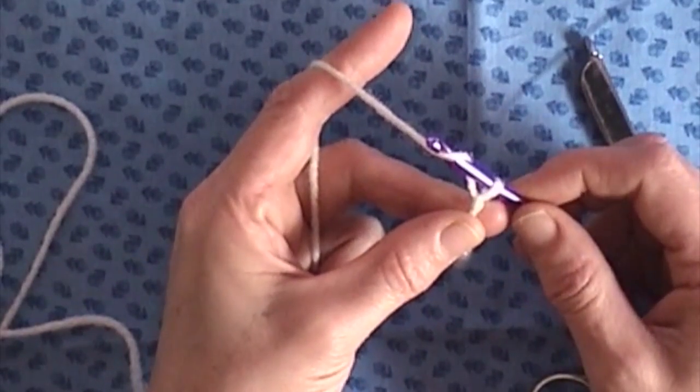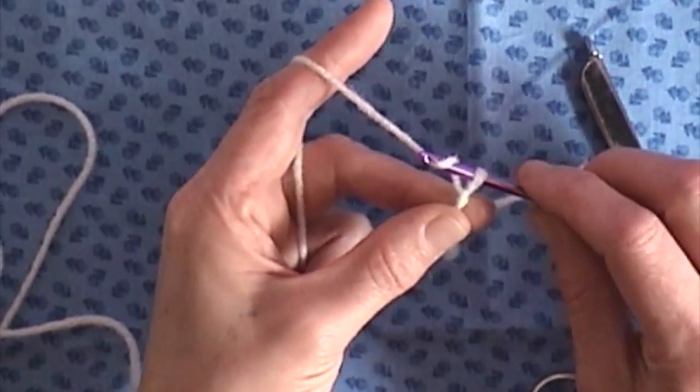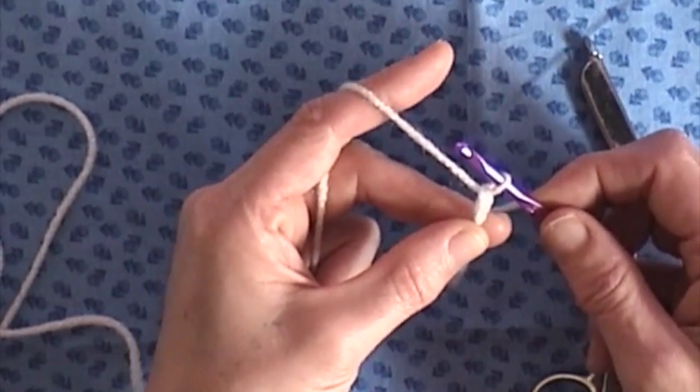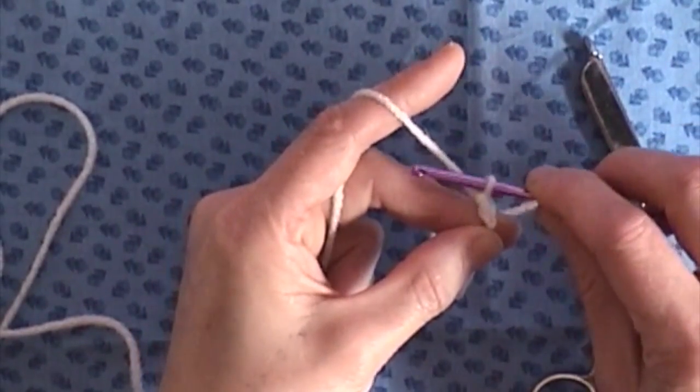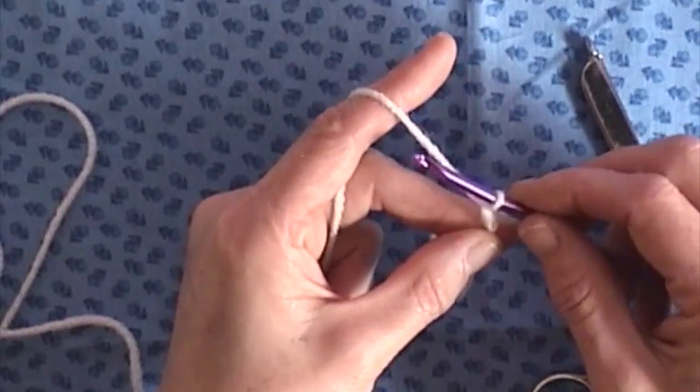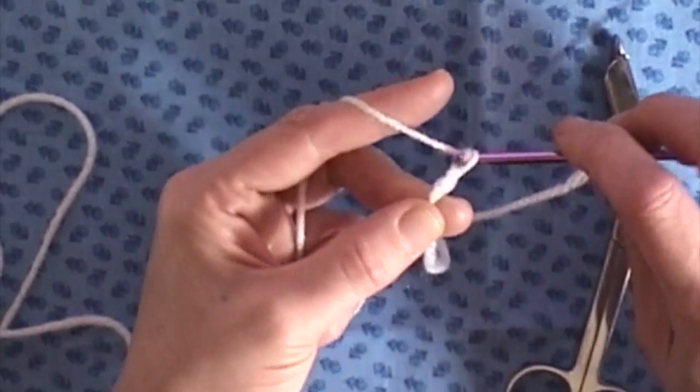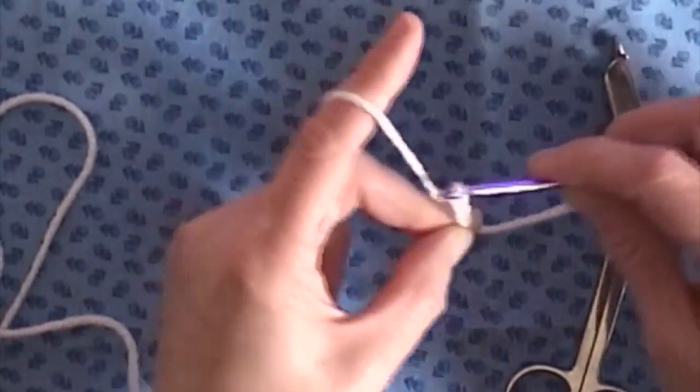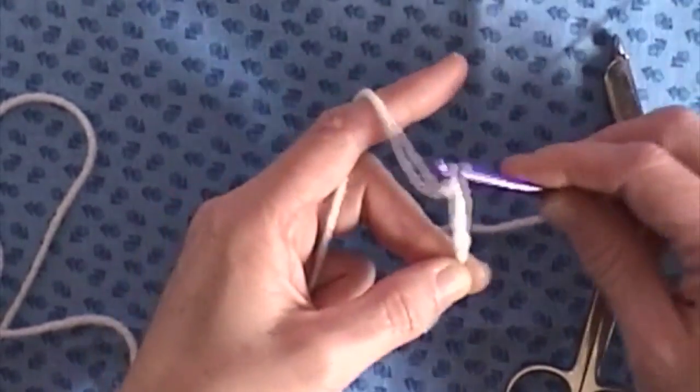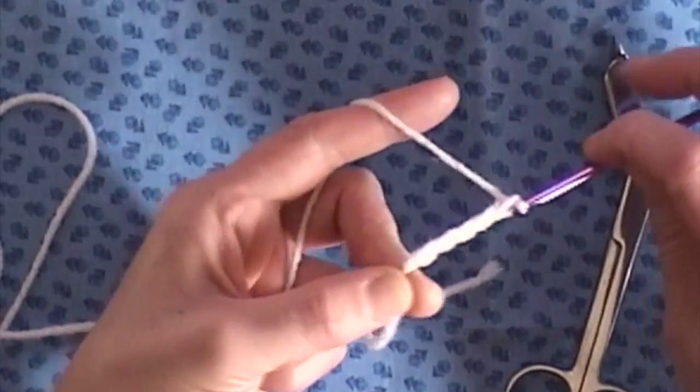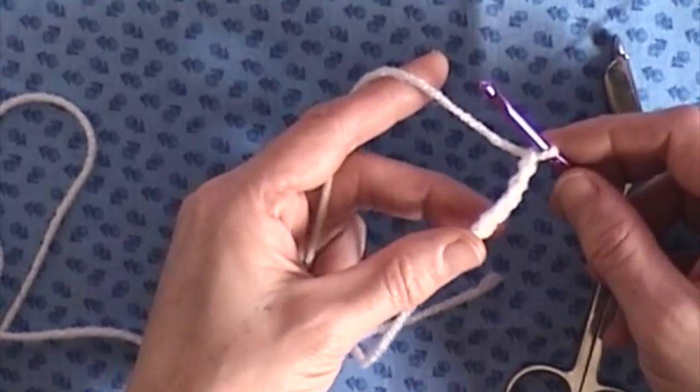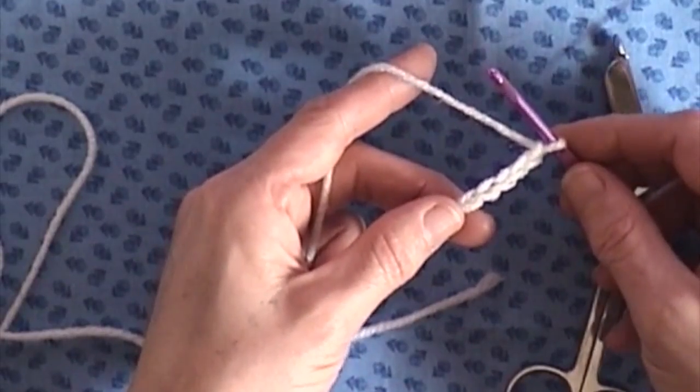Bring your hook up and pull it through the loop. Again, go under, which is like between these two fingers here, and grab your yarn and pull it through. You can chain as many or as little as you want. So that's basically how to start out crocheting, and I hope that helps.